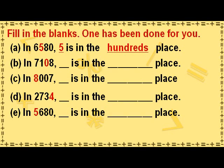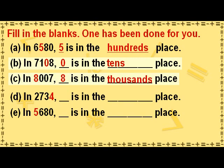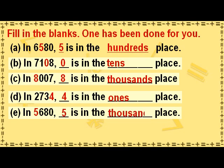Fill in the blanks; one has been done for you. In 7108, the 0 is in the tens place. In 8007, the 8 is in the thousands place. In 2734, the 4 is in the ones place. In 5680, the 5 is in the thousands place.